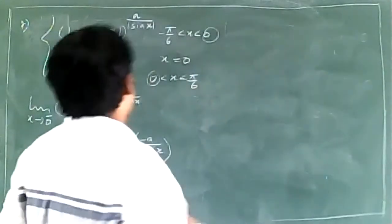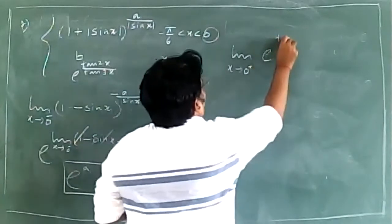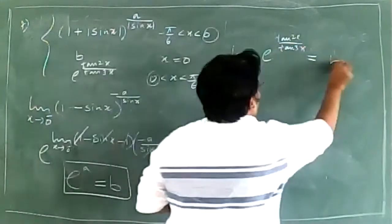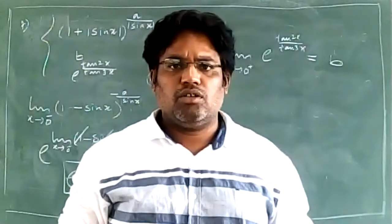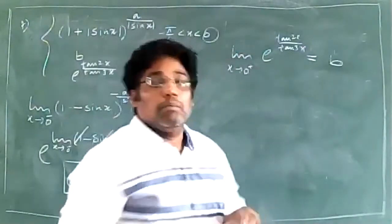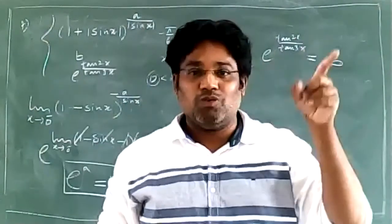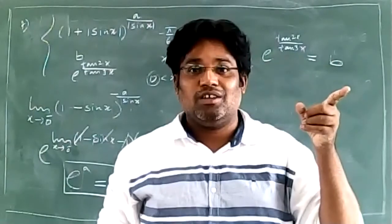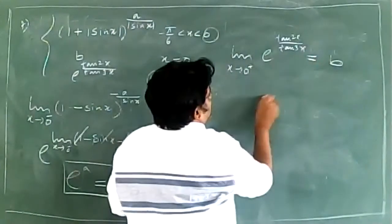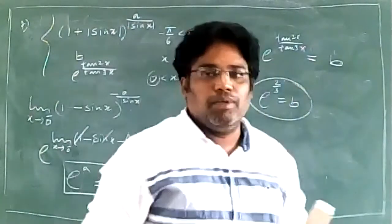Coming to right hand limit: limit x tends to 0 plus of e to the power of tan 2x by tan x. f(0) equals b. Since limit of tan x by x is 1, I multiply and divide tan 2x by 2x and tan 3x by 3x — tan 2x over 2x becomes 1 and tan 3x over 3x becomes 1. So the exponent reduces to 2 by 3. Right hand limit equals e to the power of 2 by 3, and this equals b. So b equals e to the power of 2 by 3.